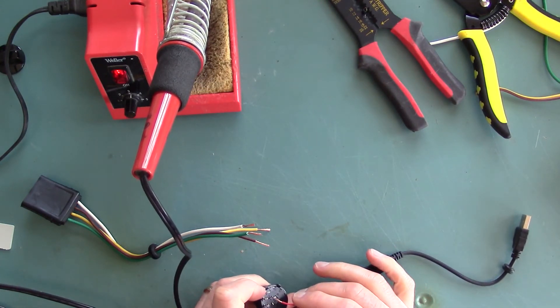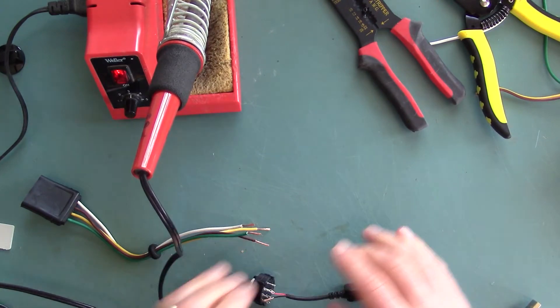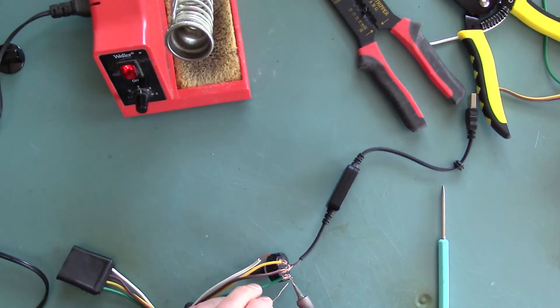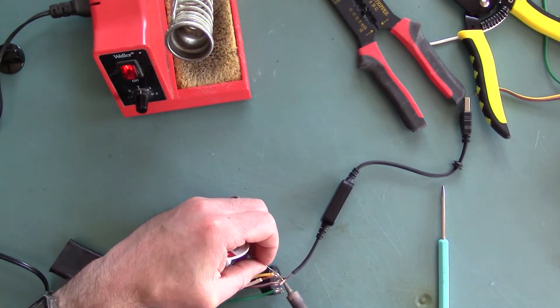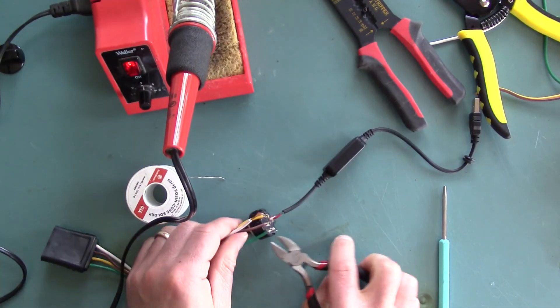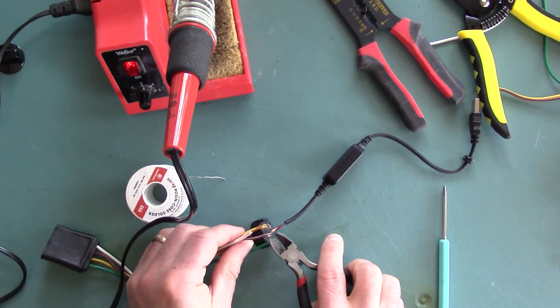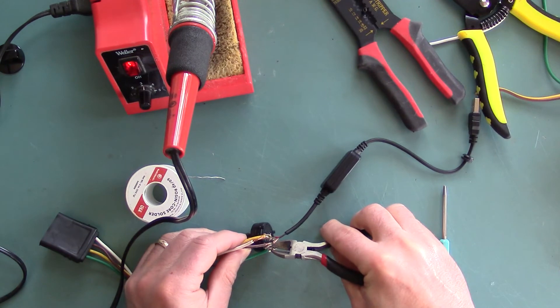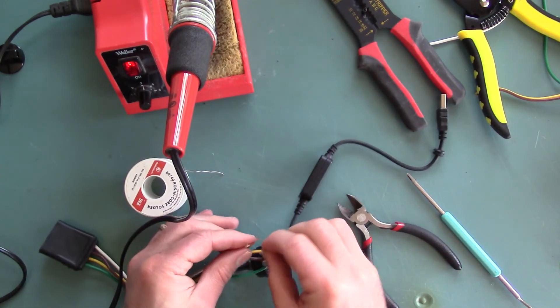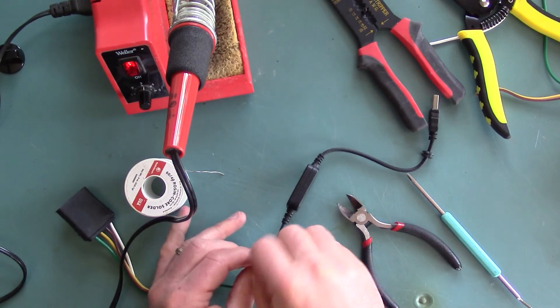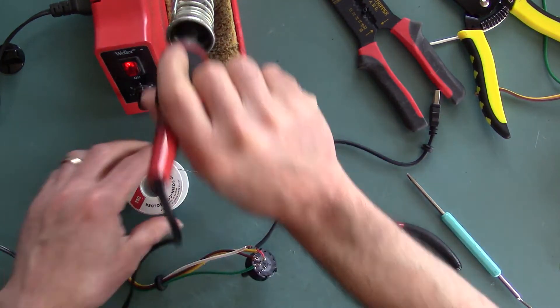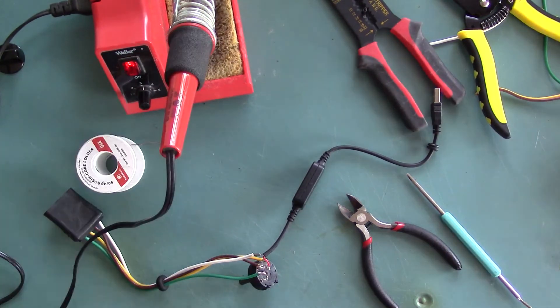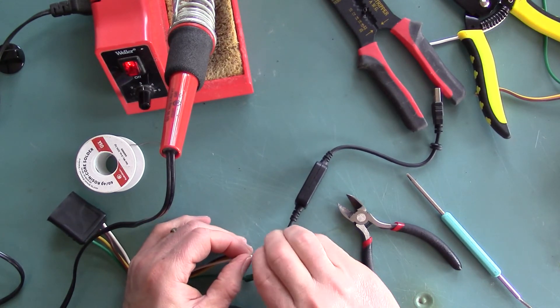Solder the red wire to the rotary switch's common pin. Solder the trailer wires to three other pins on the rotary switch. Make sure there are no stray strands of wire poking out that could cause short circuits between the connections. Solder the black wire on the converter to the white wire on the trailer harness. I'm going to fold it back and wrap it with electrical tape.